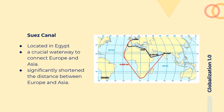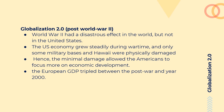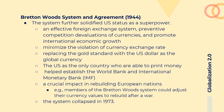World War II had a disastrous impact on the world, but not on the United States. The US economy grew steadily during wartime, and only some military bases and Hawaii were physically damaged. The minimal damage allowed Americans to focus more on economic development. The Bretton Woods system and agreement was implemented in July 1944, and further solidified US status as a superpower. The Bretton Woods agreement was an effective foreign exchange system to prevent competitive devaluation of currencies and promote international economic growth.